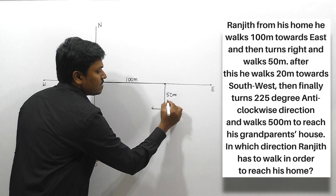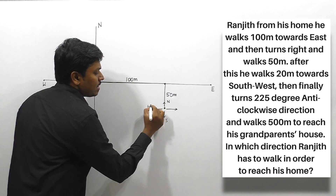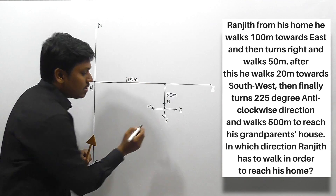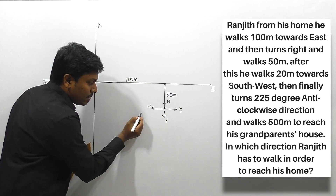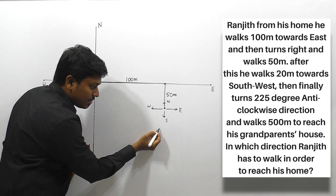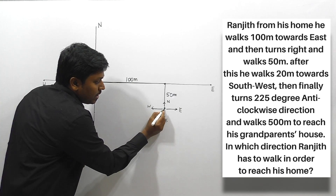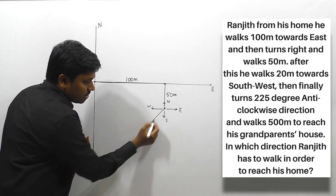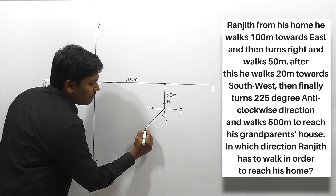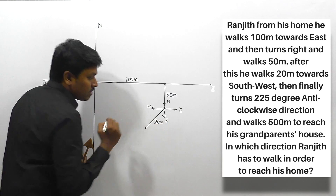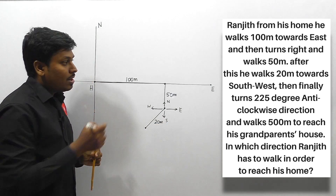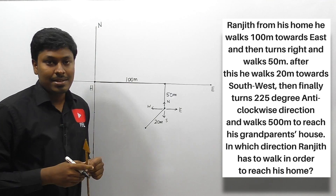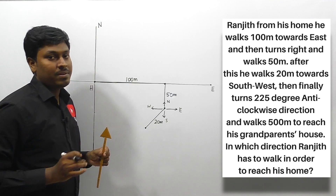From this point he is turning southwest and walks 20 meters. Southwest will be this side — draw exactly at an angle of 45 degrees. So 45-degree southwest direction, walking 20 meters. After reaching this point, look at the line carefully — he is turning 225 degrees anti-clockwise direction. This is the region where most students will make a mistake.